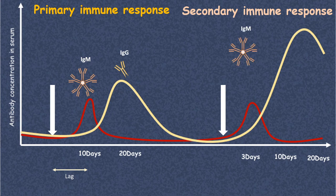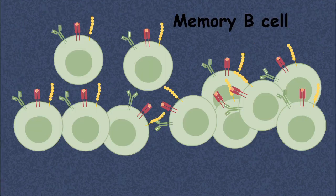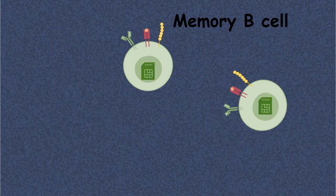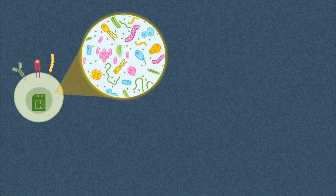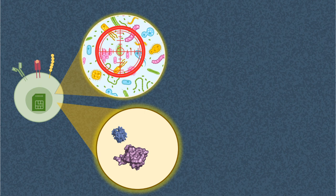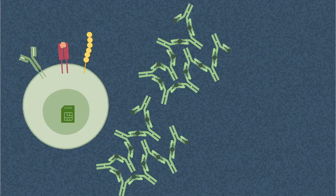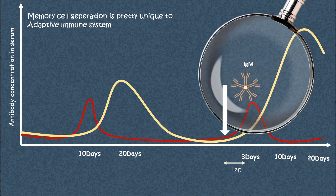In a secondary immune response, this lag is much shorter: IgM can be produced within about 3 days and IgG within about 10 days. The second time the same pathogen invades, the immune response is faster and of higher magnitude. This is because memory B cells, formed after the primary infection, retain molecular memory of the pathogen. Upon re-exposure, they quickly differentiate into antibody-secreting plasma cells. The generation of memory cells is therefore the key aspect of the secondary immune response.